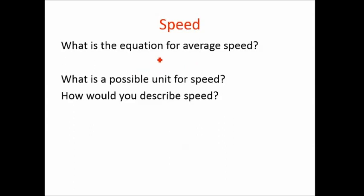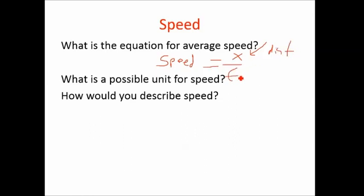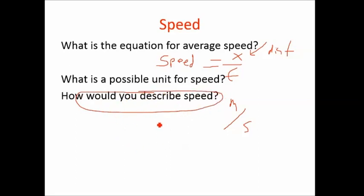Average speed: we're going to talk about average speed. Average speed is basically the distance we travel — not the displacement — divided by the time it takes to get there. Units of speed are meters per second, miles per hour, all these sorts of things. Speed is how fast you are traveling — how many meters you go every second.